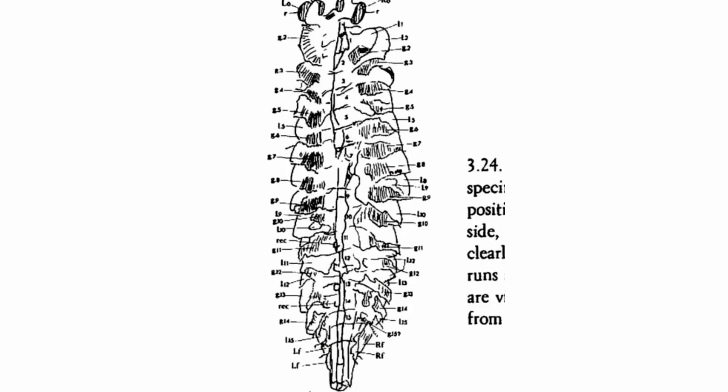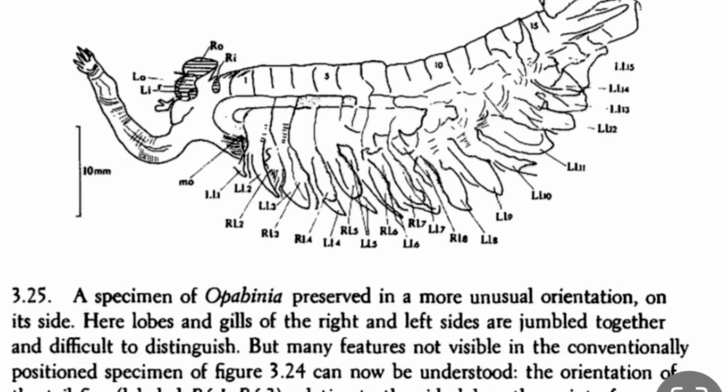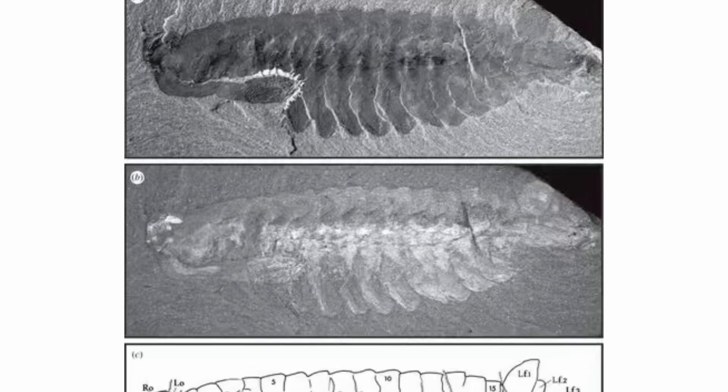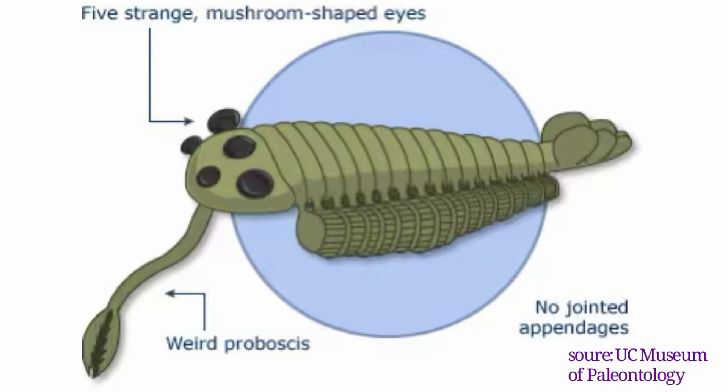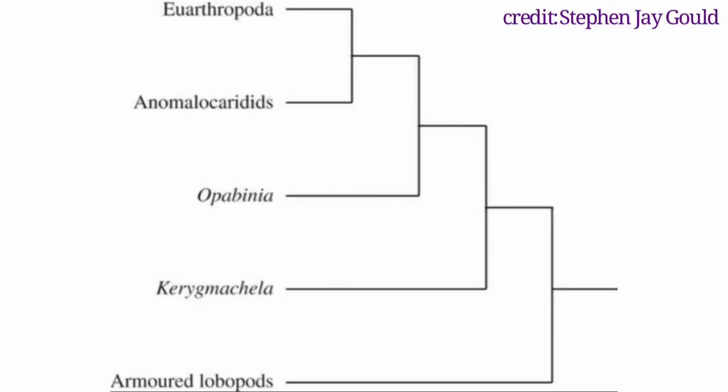Opabinia's body was divided into 15 segments, each with one pair of leg-like fins. This body type is reminiscent of arthropods but does not fit into any existing categories and presents as a much more primitive form, as Opabinia was likely a swimming creature and did not have true segmented legs like most other known arthropods. All of these characteristics place Opabinia close to but outside of the euarthropod clade. This tree from the 1970s shows Anomalicharis as an outgroup to the euarthropods and then Opabinia branching off just before them.